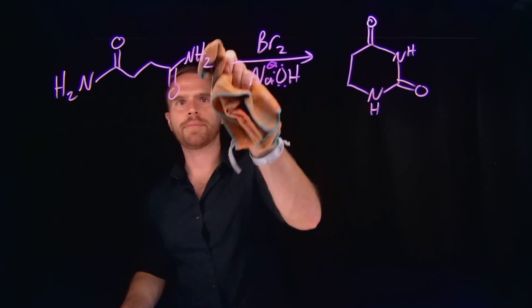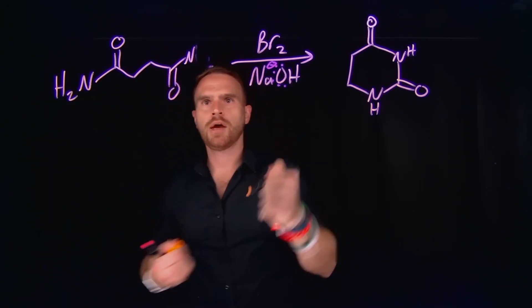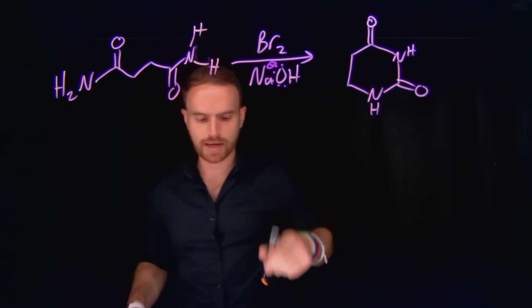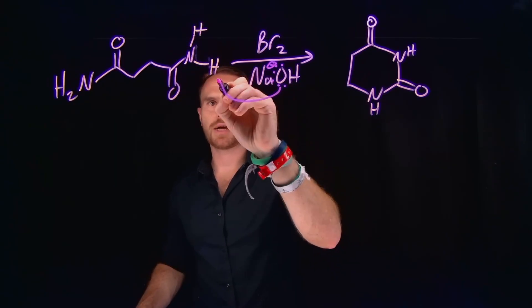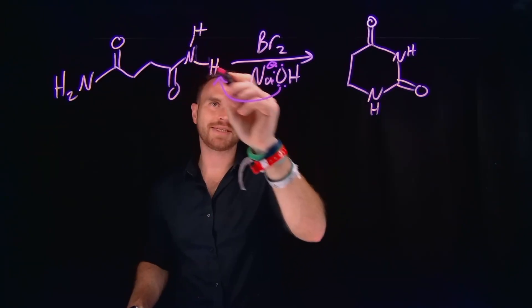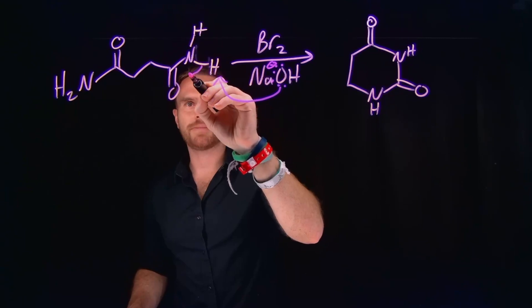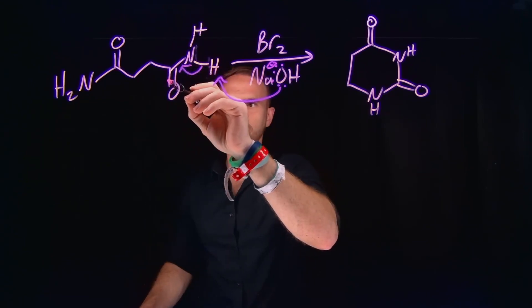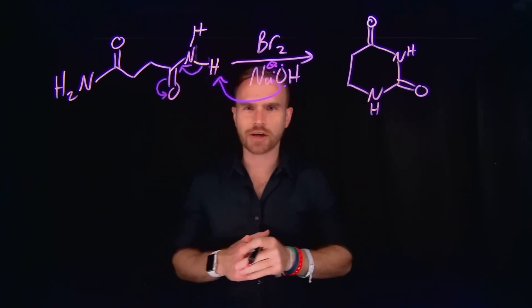Instead, what might happen if we actually draw in these nitrogen to hydrogen bonds, we can do a deprotonation reaction, where this hydroxide will come and potentially deprotonate this hydrogen. And then what's likely to occur next is that these electrons will actually come down to form a carbon to nitrogen double bond, which will result in a cascade of electron movement, in which these pi electrons come to form a negatively charged oxygen.